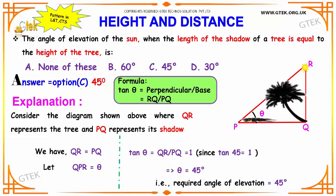We have to consider QR as the tree and take PQ to be its shadow. We have to find the angle of elevation of the sun, that is the theta over here. And it is given that the height of the tree and the length of the shadow is equal, so that makes QR equal to PQ. And our angle is theta, that is angle QPR is theta.